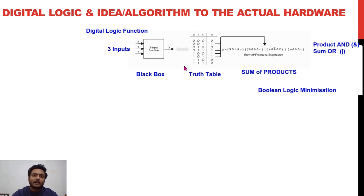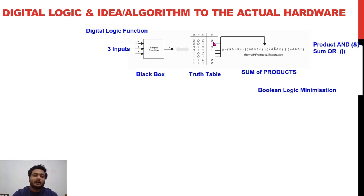Once you get the truth table, you can try to make a Boolean expression from it. You can go for sum-of-product expressions, and then you take those expressions and minimize the minterms and product terms using Karnaugh map optimization and other methods to perform Boolean logic minimization. Once you're done with that, you want to implement this particular function.